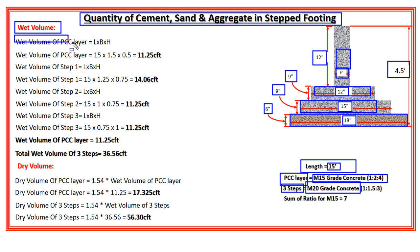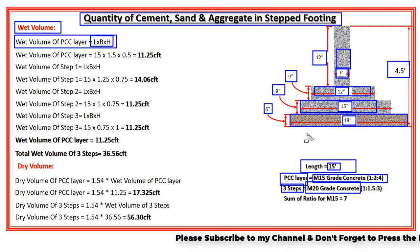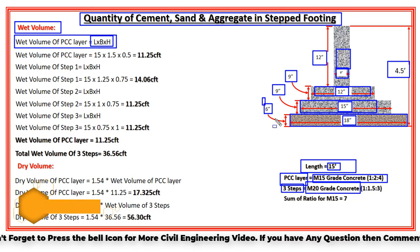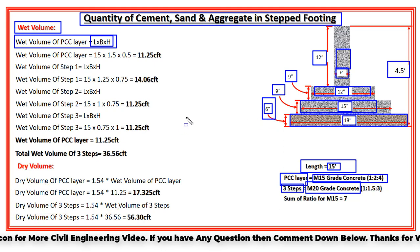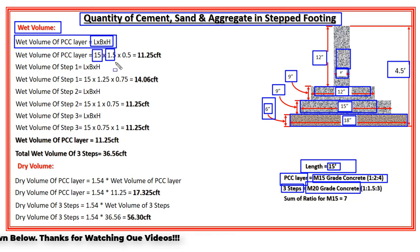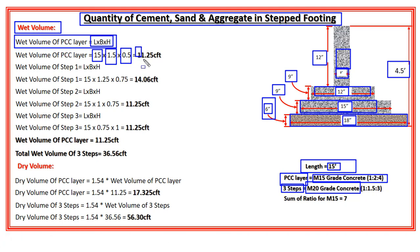The wet volume of the PCC layer will be equal to length × breadth × height. The length of the footing is 15 feet, the breadth or width of the PCC layer is 18 inches which equals 1.5 feet, and the height of the PCC layer is 6 inches which equals 0.5 feet. So the wet volume of the PCC layer = 15 × 1.5 × 0.5 = 11.25 cubic feet.